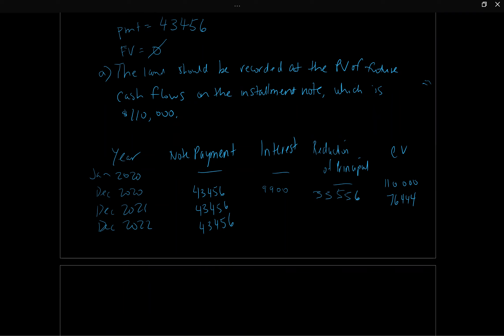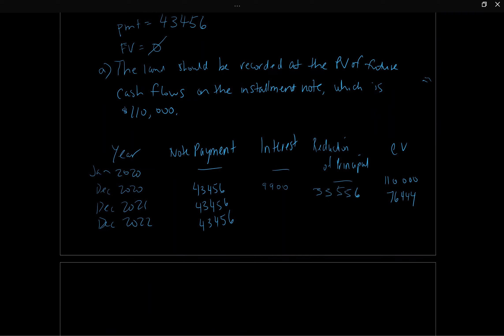Then $76,444 × 9% gives us $6,880 of interest in the next payment — interest is going down as expected. The reduction of principal is $36,576, giving a new carrying value of $39,868. Then $39,868 × 9% = $3,588 of interest, with a reduction of principal of $39,868, and the new carrying value is zero. At maturity, we're not going to pay anything back, so the note sits at zero on the statement of financial position.